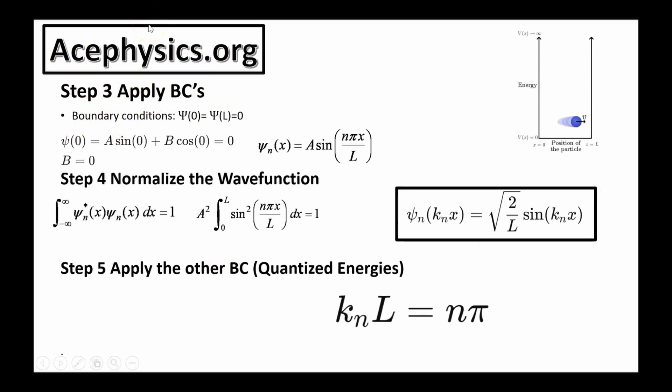Step three in any Schrödinger equation problem is to apply the boundary conditions. In this case, the boundary conditions are psi of zero equals psi of L equals zero. Psi is related to the probability of finding the particle, and for this simple problem, the particle can't be outside of the box, which means the wave function can't exist outside of the box. So the wave function of location zero equals the wave function of location L. It has to equal to zero. The particle is confined within the box.